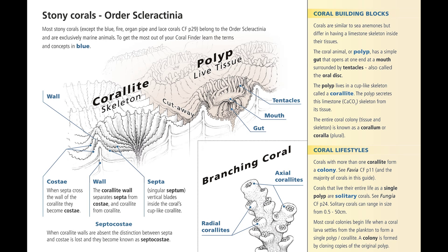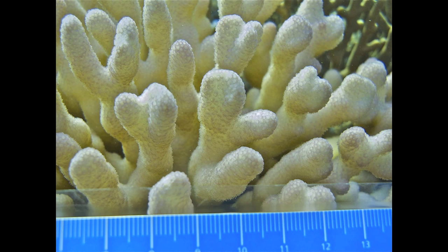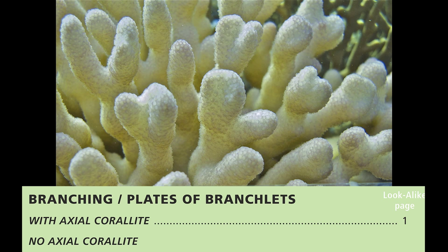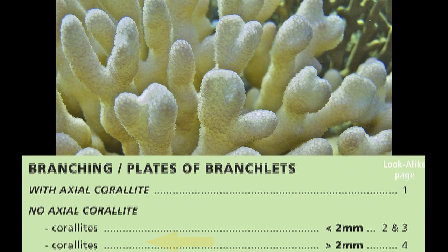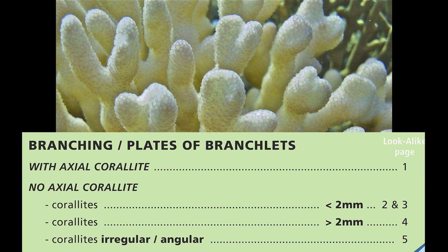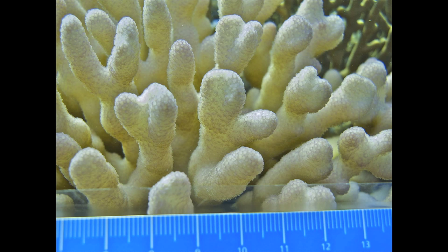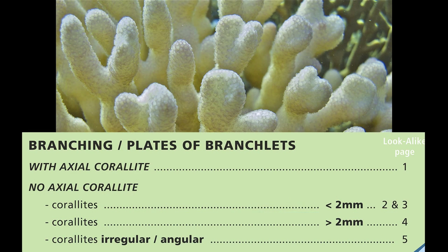That was an example of how to use one of the ten or so basic terms needed to use the Coral Finder to its full extent. Once you learn the terms in blue and begin to feel the force, nothing will stop you. So now we're on our way — let's follow through on the key page. There is no axial coralite. To select a look-alike page we now need to answer one of the following questions: are the coralites less or greater than two millimeters? They're pretty small, so let's go with less than two millimeters, which suggests pages two and three.